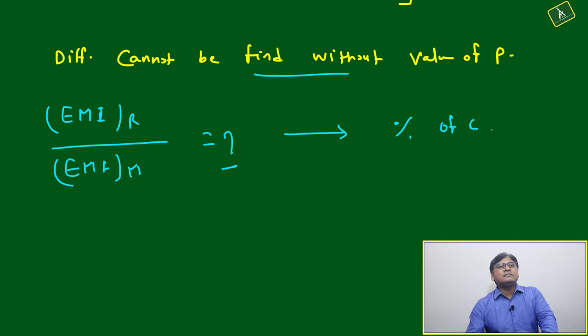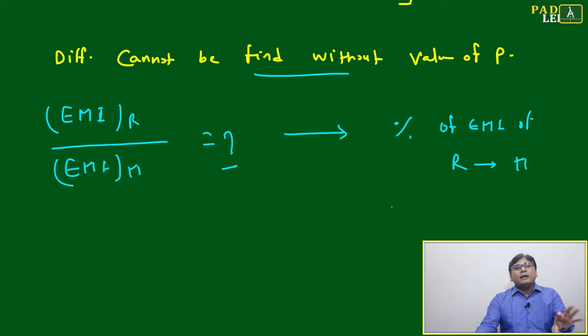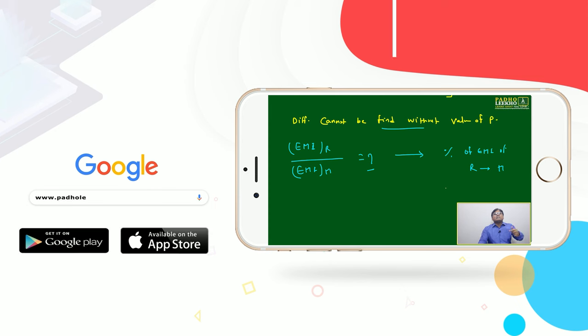Now based on that, we will be able to find the percentage: EMI of Ram is how much more than Mohan, or percentage of EMI of Mohan is how much percentage less than Ram, or vice versa. This type of percentage-based calculation and ratio-based calculation we will be able to do without knowing the principal amount.